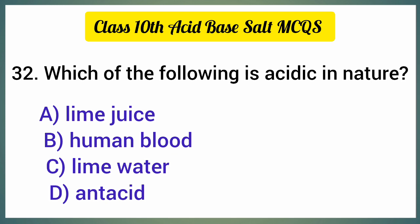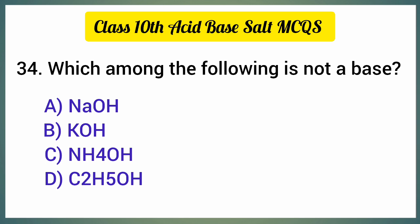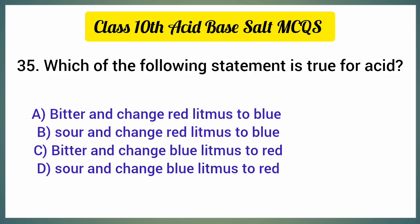Which of the following is acidic in nature? The correct option is option A, lime juice. Which of the following is not a mineral acid? The correct option is option B, citric acid. Which among the following is not a base? The correct option is option D, C₂H₅OH.